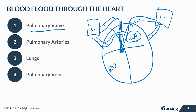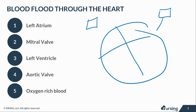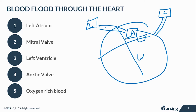The pulmonary veins are now entering the left atrium. The blood coming into the left atrium is oxygen-rich because it has already gone through the lungs. Once it reaches the left atrium, it is pumped to the left ventricle — but first it passes through a valve called the mitral valve, which opens and allows the blood to enter the left ventricle.